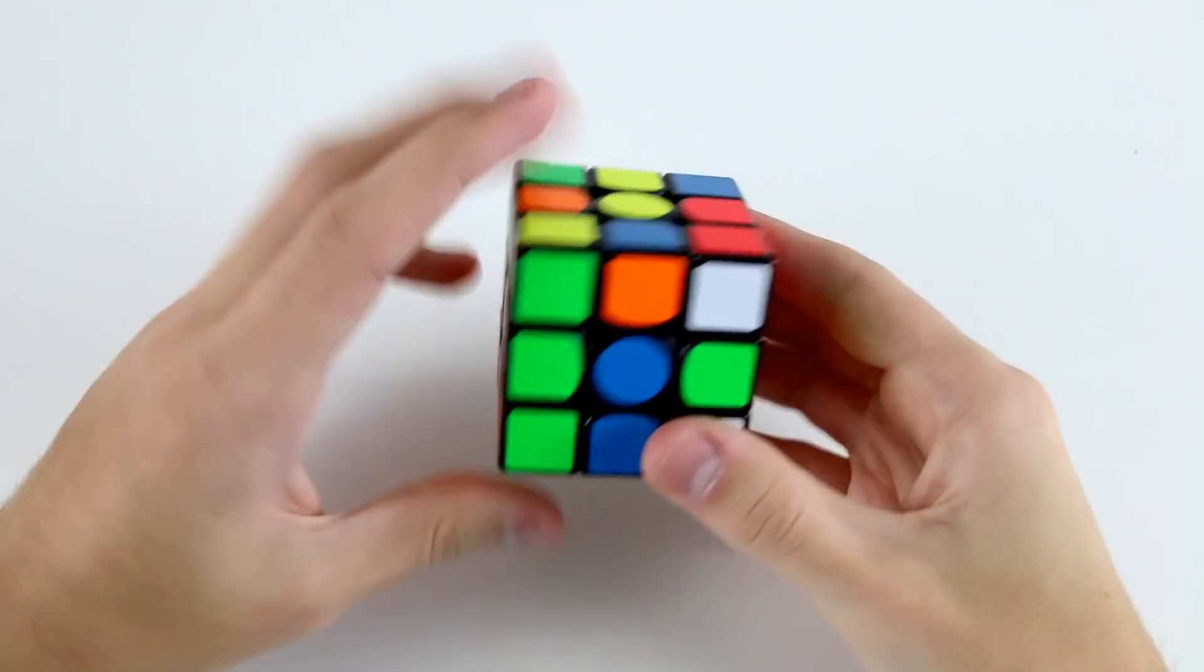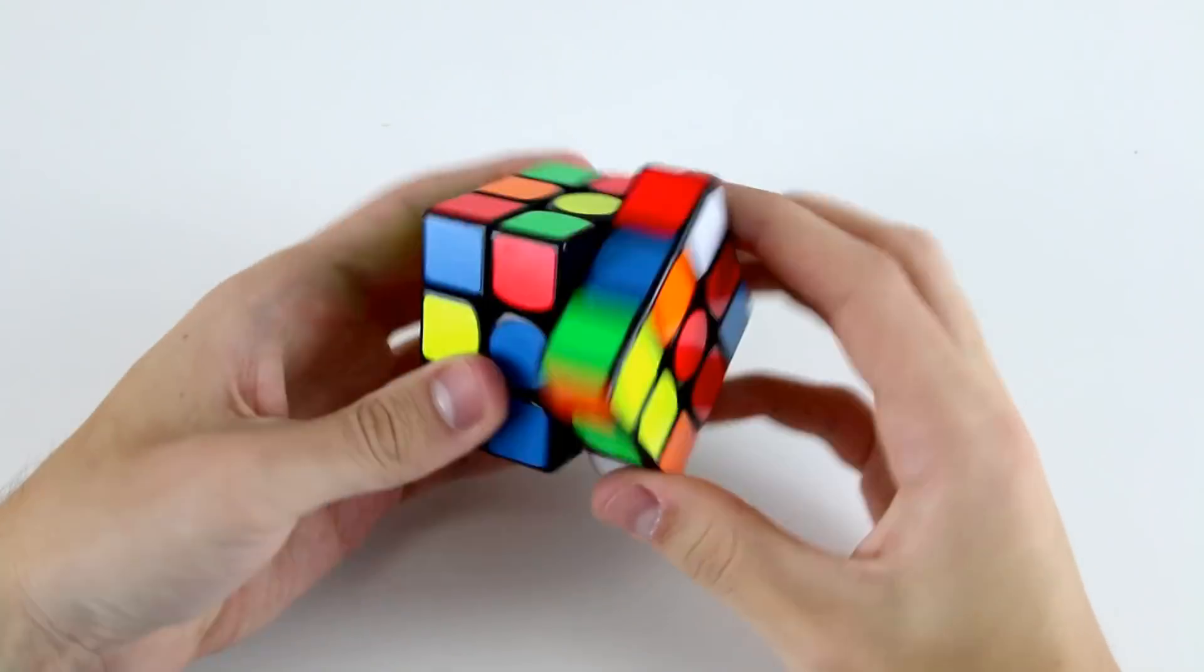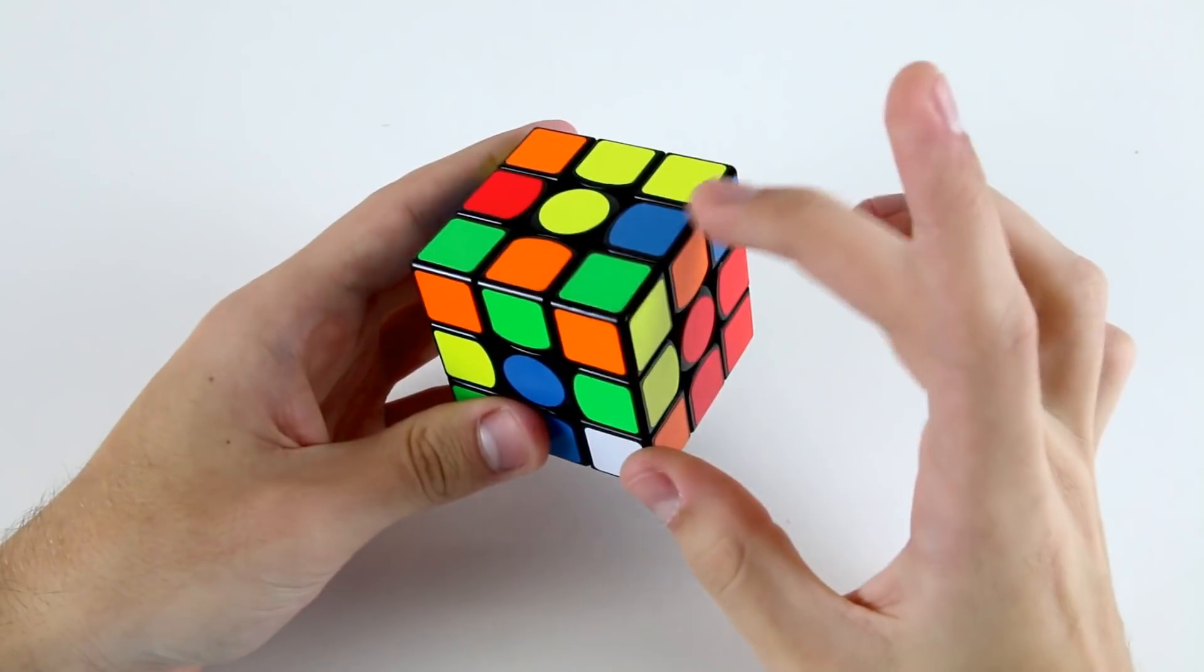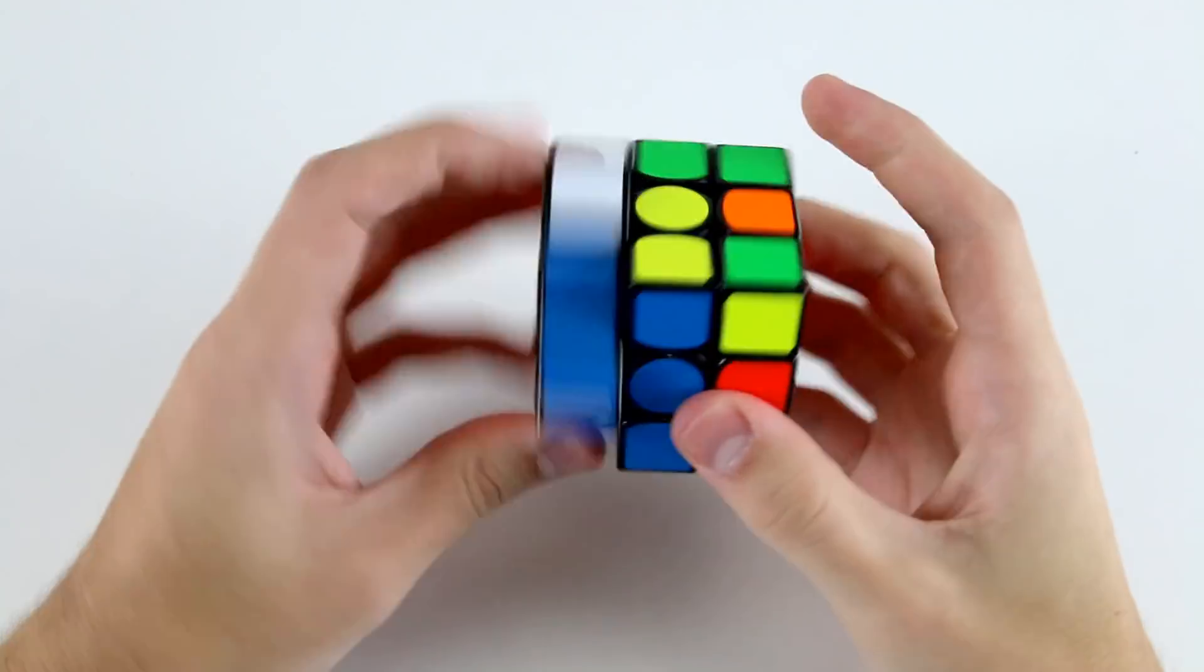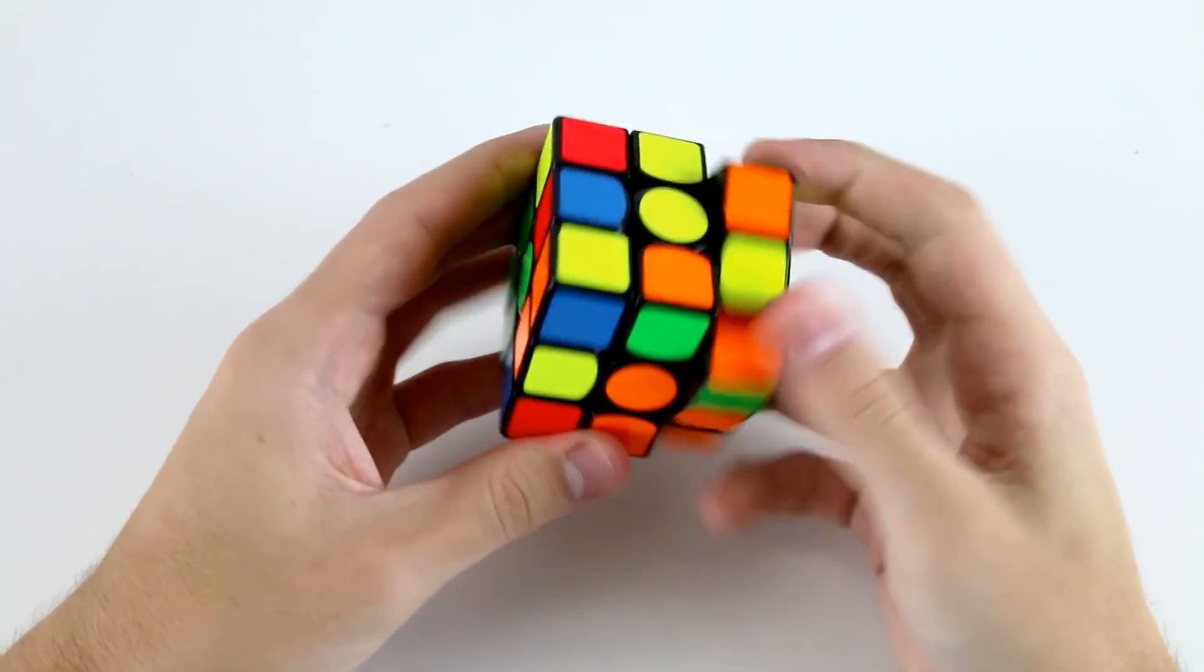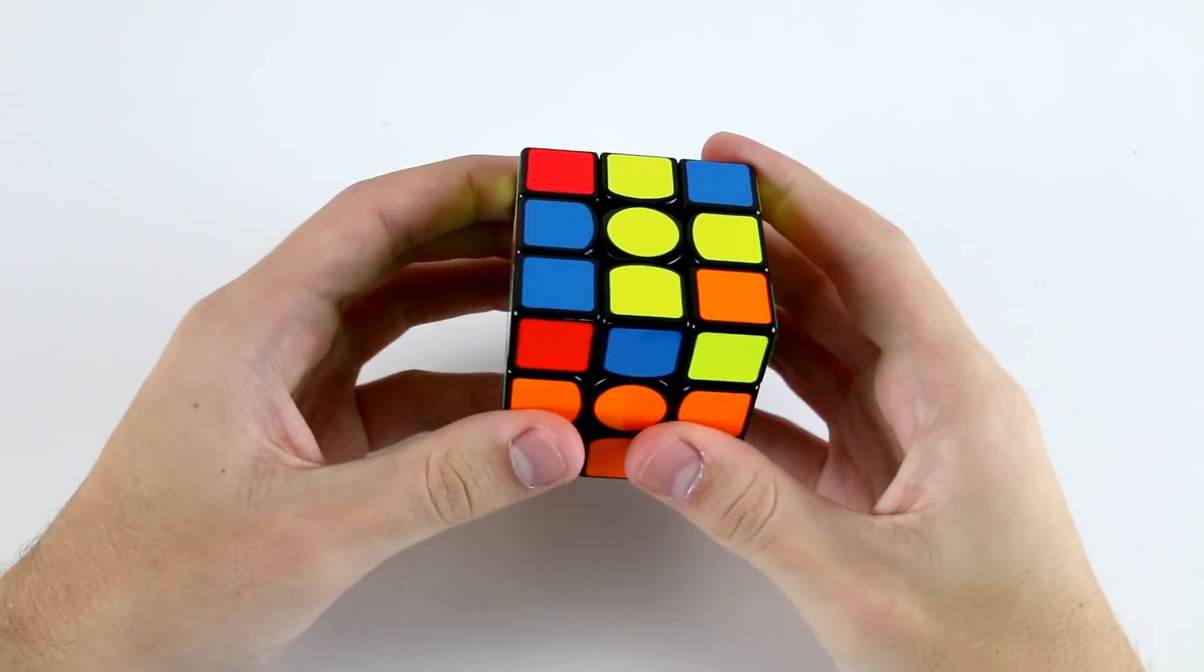For my first f2l pair, I'd probably go for these two. Then I guess I could go for these two into this slot. Whilst I'm doing that, I'm tracking these two so I can pair them up and insert them there.